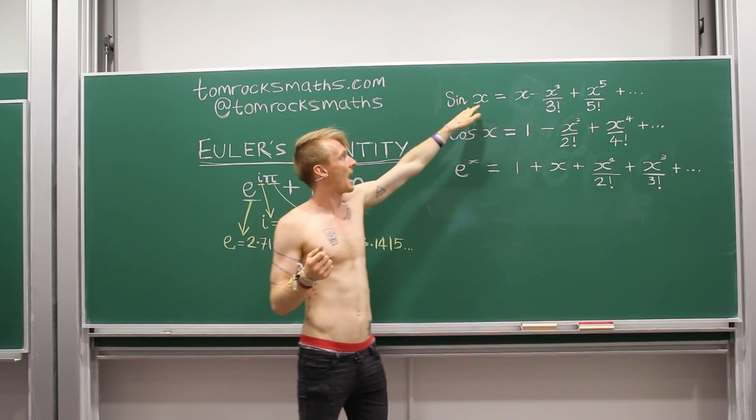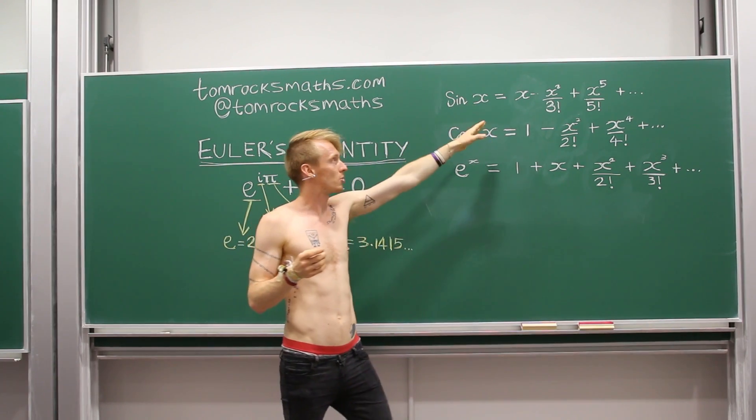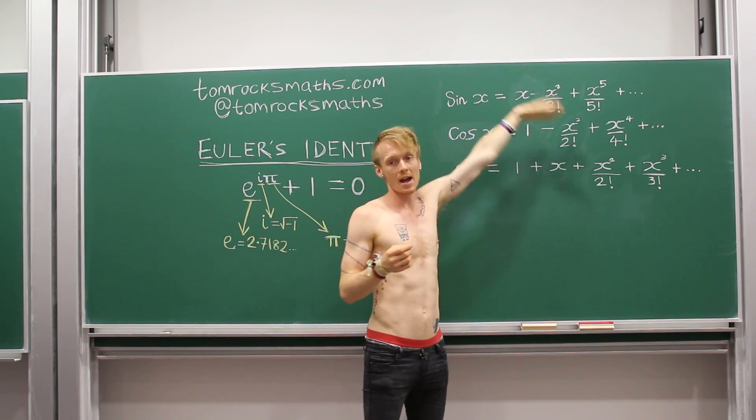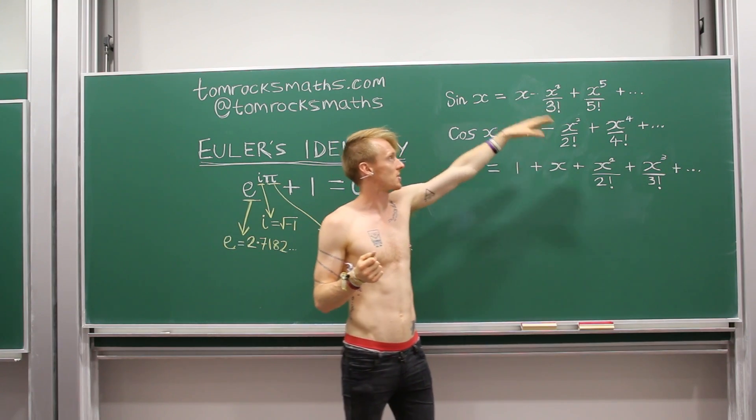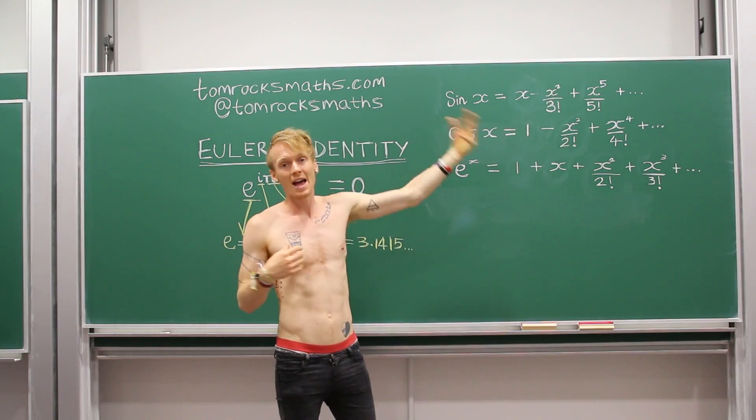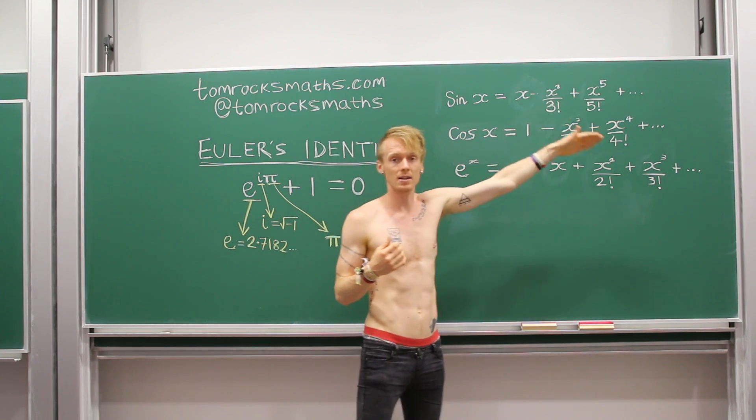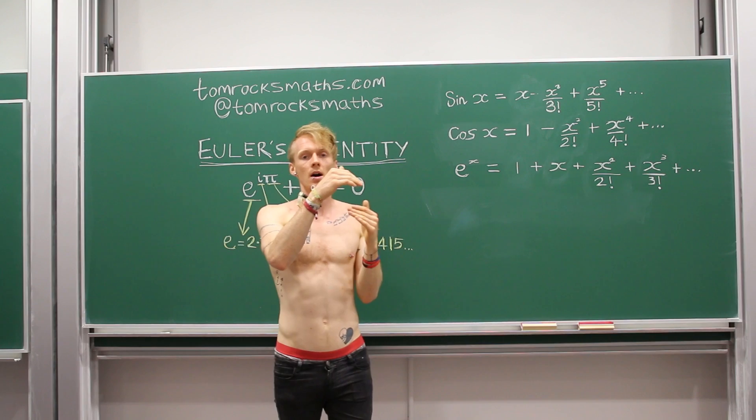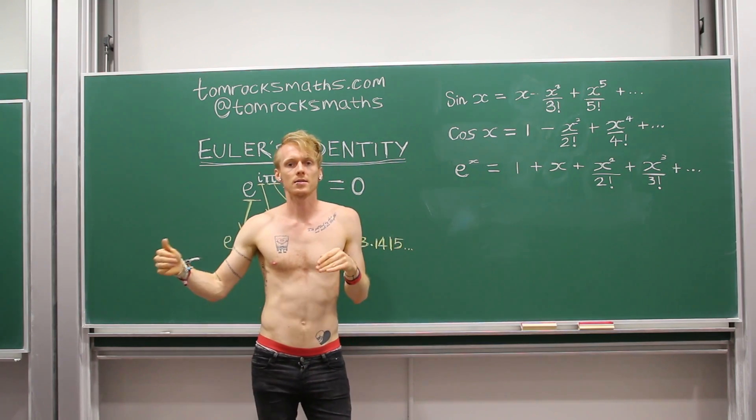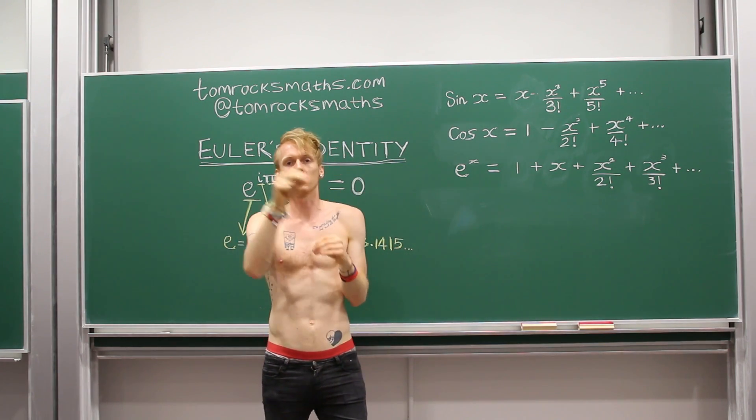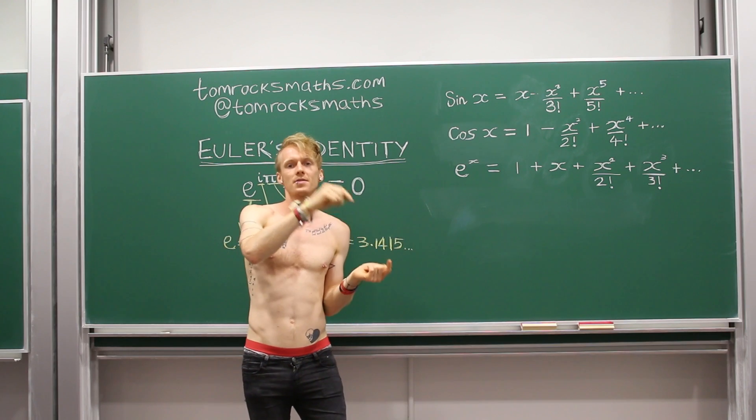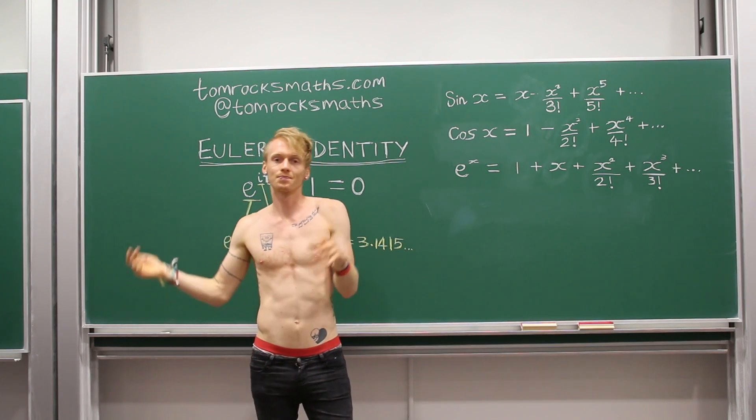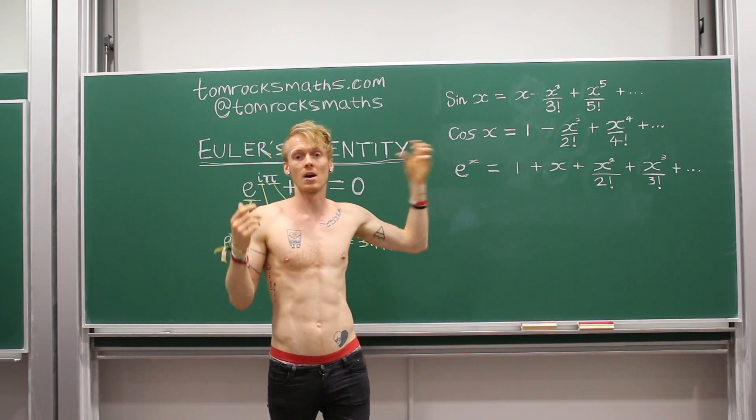So sine of any number x is equal to x minus x cubed over three factorial plus x to the fifth over five factorial, etc., and this carries on with the same pattern. And the factorial here just means the number times all the ones below it. So three factorial is three times two times one, five factorial is five times four times three times two times one. Why we use an exclamation mark I have no idea.